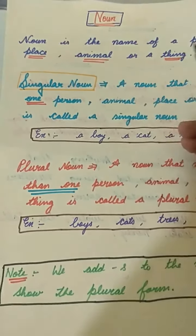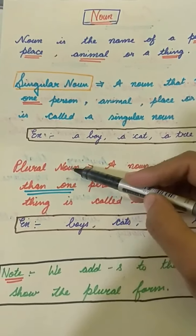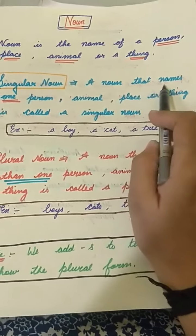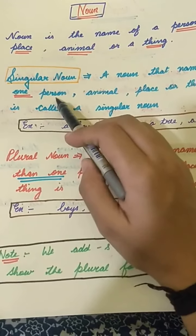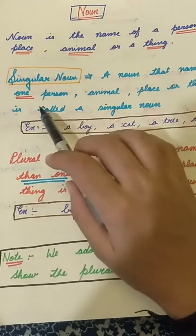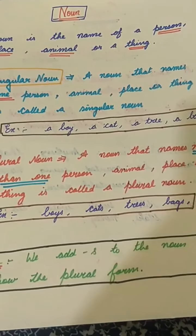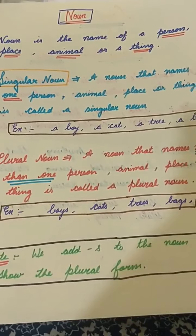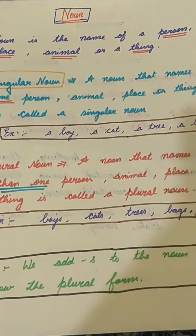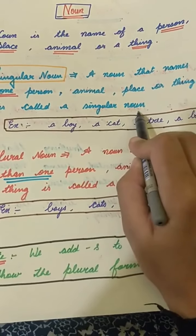So now I am going to cover the topic of singular noun and plural noun. What is a singular noun? A noun that names one person, one animal, one place, or one thing is a singular noun. If you talk about one person, one place, one animal, or one thing, then it is a singular noun.